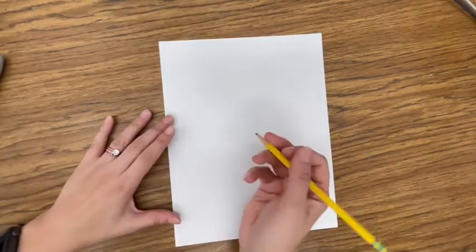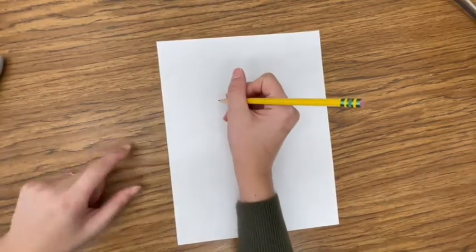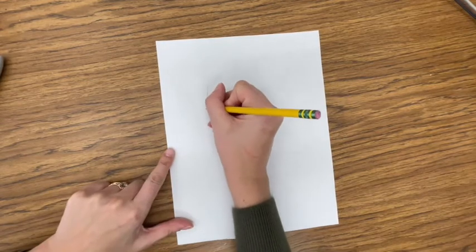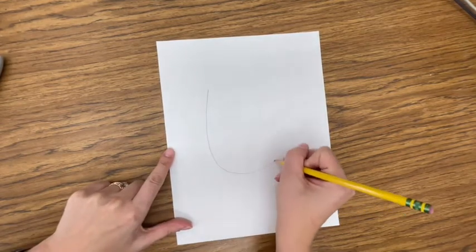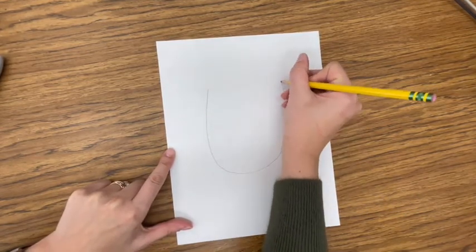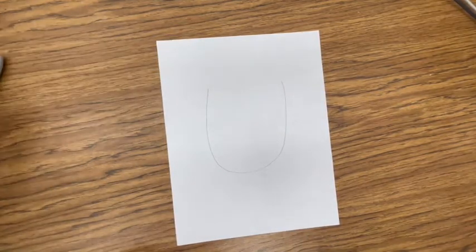So to begin, this is the only thing we're doing in pencil, is we're going to draw a big U-shape around the middle of the paper. That's the only thing we're doing in pencil. Now we're going to go to black marker.